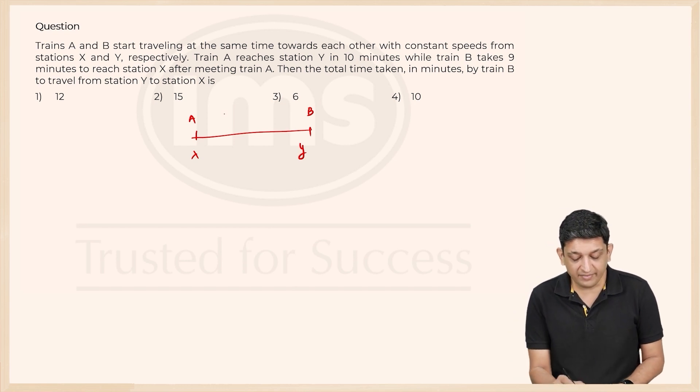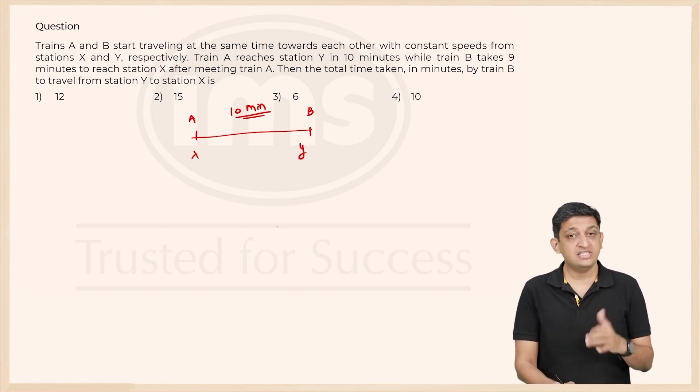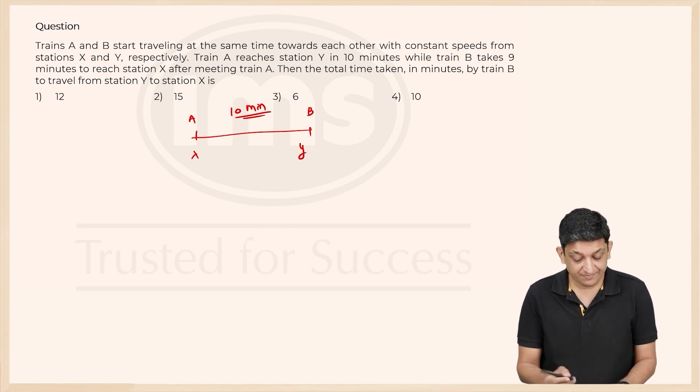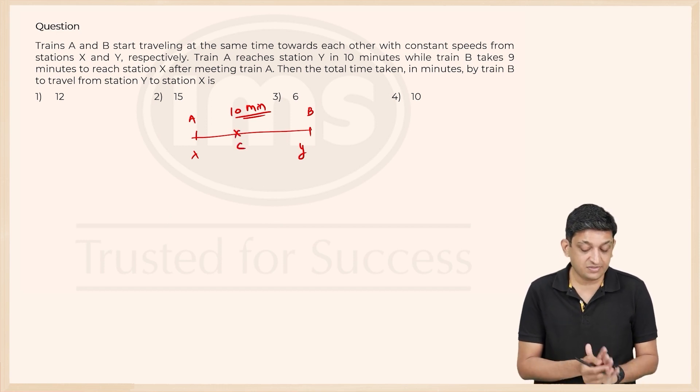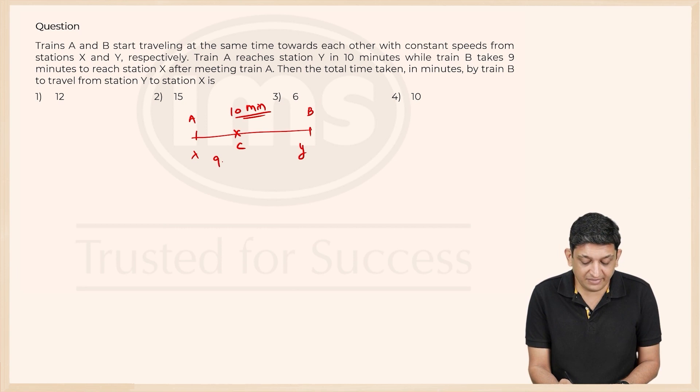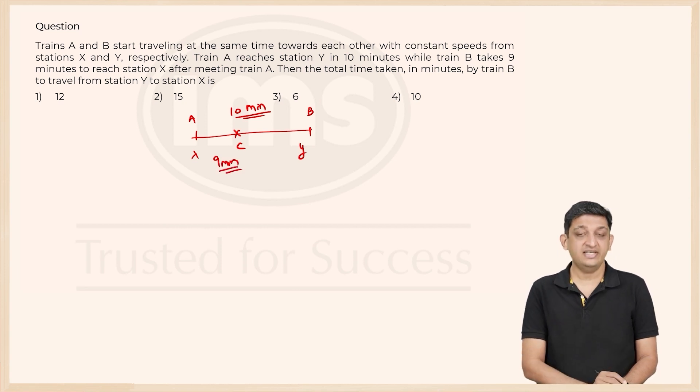Train A reaches station Y in 10 minutes. So A goes from X to Y in a total time of 10 minutes, and B takes 9 minutes to reach the station after meeting train A. Let us say there is this point C where these two trains meet. After that, train B takes 9 minutes to reach its destination.